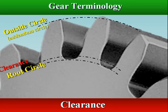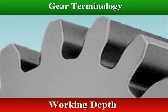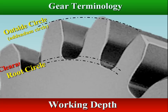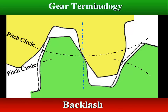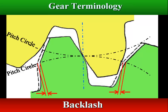Clearance is the radial distance from the top of the tooth to the bottom of the tooth in a meshing gear. A circle passing through the top of the meshing gear is known as the clearance circle. Working depth is the radial distance from the addendum circle to the clearance circle. It is equal to the sum of the addendum of the two meshing gears. Backlash is the difference between the tooth space and the tooth thickness, as measured along the pitch circle.